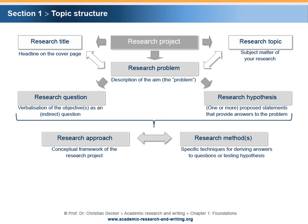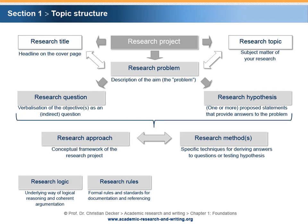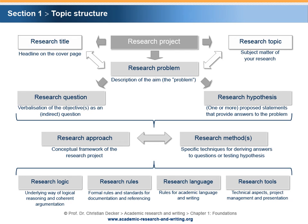Additional issues will interact with the described framework. Research logic addresses the underlying way of logical reasoning and coherent argumentation. Research rules are formal rules and standards for documentation and referencing. Research language aims at rules for academic language and writing. Research tools address the sourcing of information, technical aspects, project management, and presentation. The illustration of the topic structure visualizes different aspects of academic research and writing in order to serve as a recurring point of orientation.